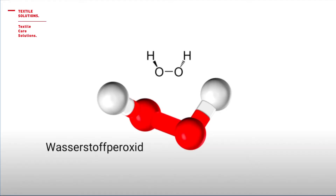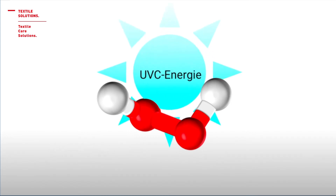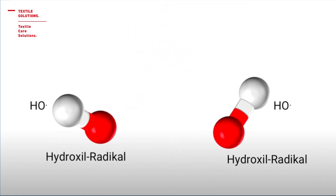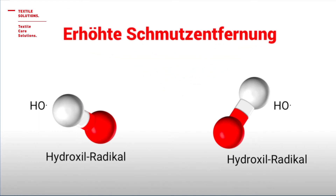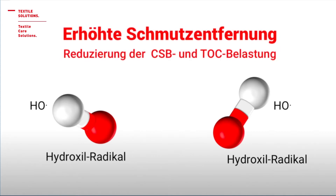Das ist die Strukturformel von Wasserstoffperoxid. Was passiert nun unter dem Einfluss von UV-C Energie? Es entstehen sogenannte Hydroxylradikale. Diese Hydroxylradikale werden auch als Waschmittel der Troposphäre bezeichnet. Sie reagieren mit vielen Arten von Verschmutzungen sowie organischen Substanzen, indem diese zersetzt und eliminiert werden. Dadurch entsteht neben der Fleckentfernung eine signifikante Reduzierung des CSB- und TOC-Werts der Waschflotte, die in den Kanal geht.